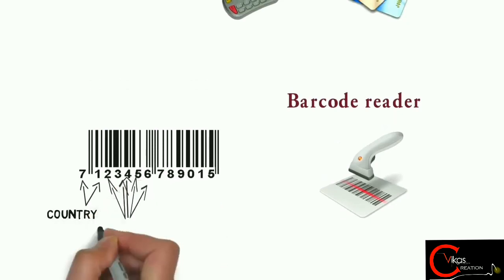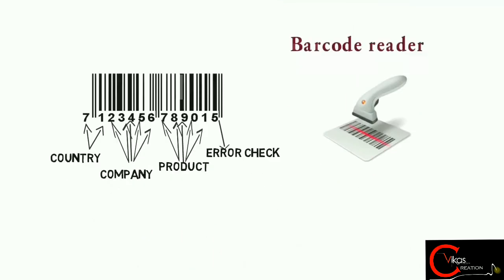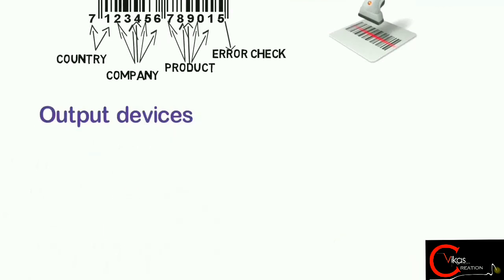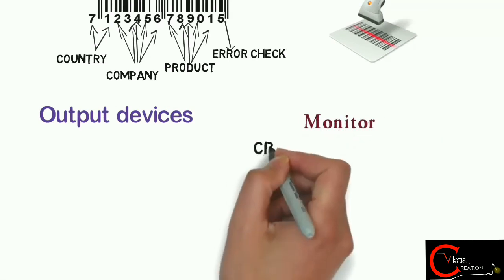In which the first two digits represent the country, and the next five digits represent the name of company, and the next five digits represent about the product, and the last digit checks any error in the rating.